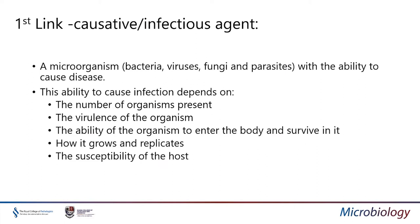The first link is the causative infectious agent. This is a microorganism which may be a bacteria, a virus, a fungus or a parasite with the ability to cause disease. The ability to cause infection depends on a number of factors — mainly the number of organisms present and the infective dose, which varies between organisms. Some organisms can cause infection with just one organism; others require a large bioburden. The virulence of the organism, its ability to enter the body and survive, how it grows and replicates, and how susceptible the host is to infection are all important.